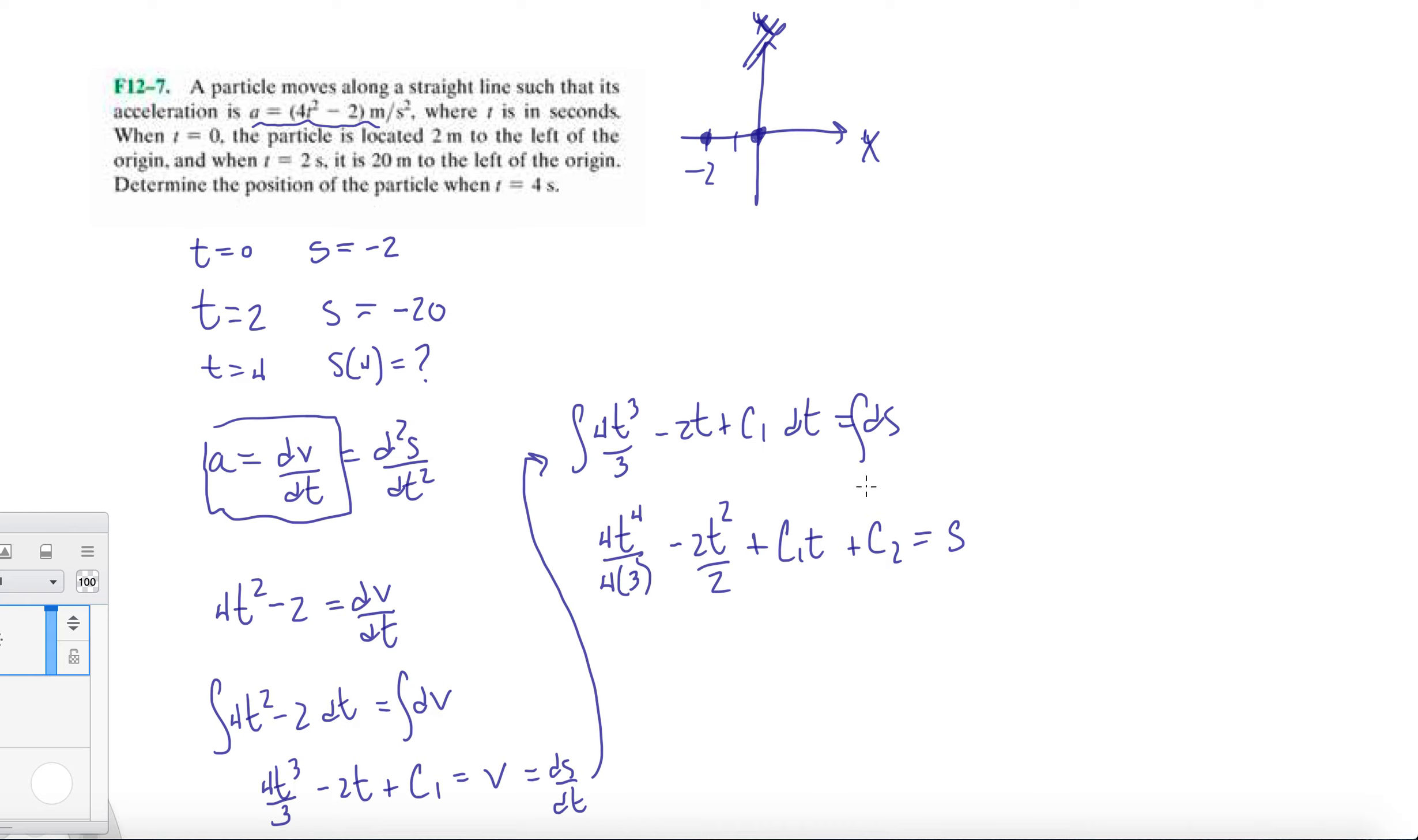Technically you're going to have two constants on each side, but you group them together to just make one giant constant. So let's eliminate some of these things. So we have s equals t to the 4th over 3 minus t squared plus c1t plus c2. And then now we're given those two conditions that we have to meet. So at t equals 0, s equals negative 2. So minus 2, that'll be 0, 0, 0. So c2, or constant c2, is equal to negative 2.